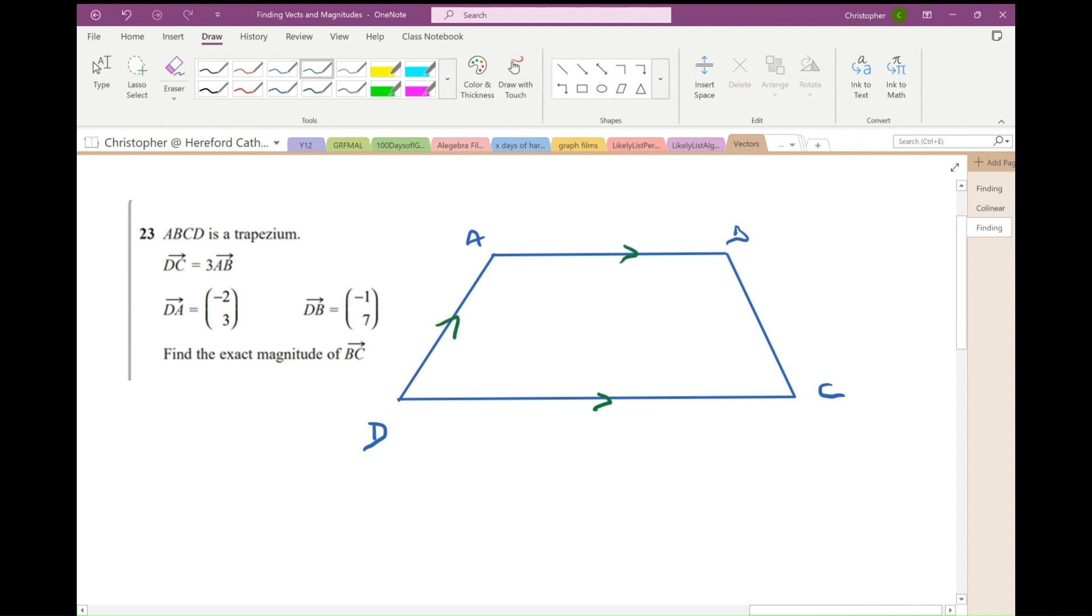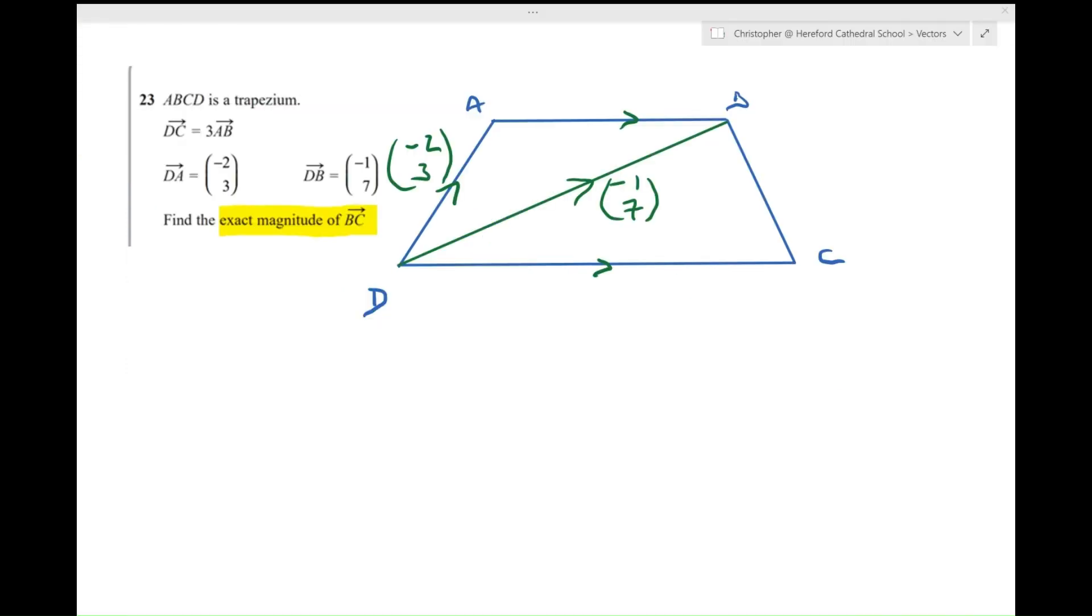Now, DA, from D to A, this way, is (-2, 3). And DB. Right, let's draw that line. D to B. And by the way, that's this way, is (-1, 7). And I'm asked to find the magnitude of BC. So that's the diagram drawn. And that's the problem I need to solve. So let's have a look at solving that problem now. Right. I need to find the exact magnitude of BC. So to start with, I'm going to need to find BC. Okay, now, if I were going from B to C, I would probably go from B to D, and then from D to C.